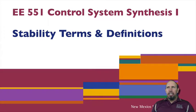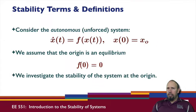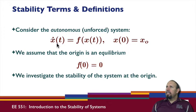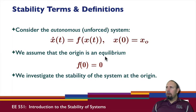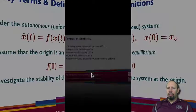We're looking at stability terms and definitions. When it comes to stability, we're considering an unforced system: x-dot equals some function of x, with some initial condition. We assume the origin is an equilibrium — that is, f evaluated at zero is zero — and so we investigate the stability of the system at the origin.